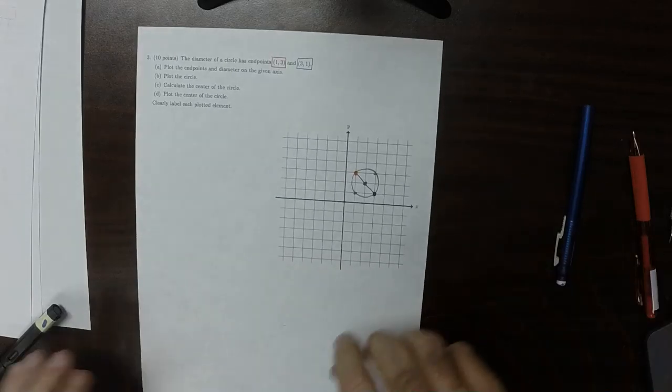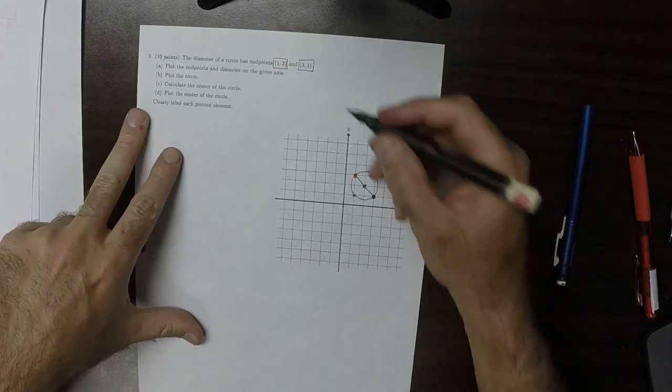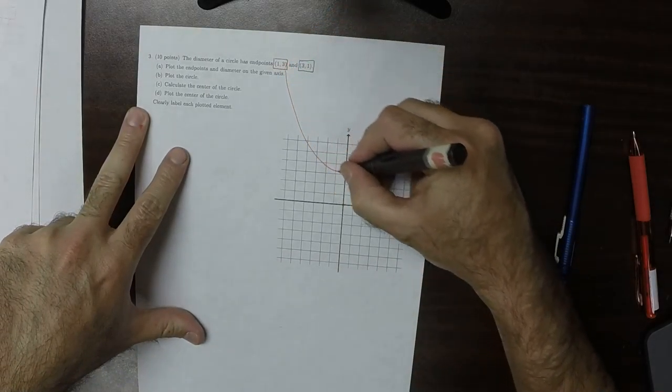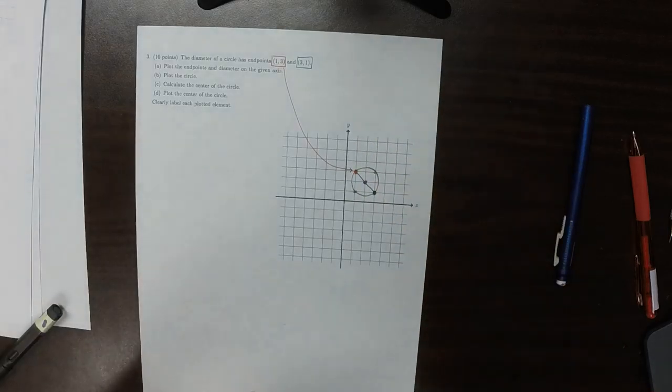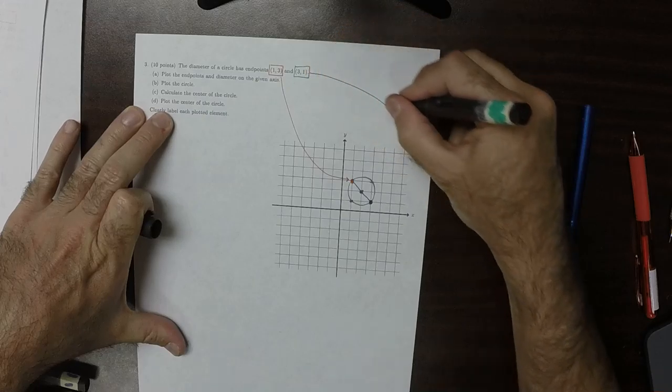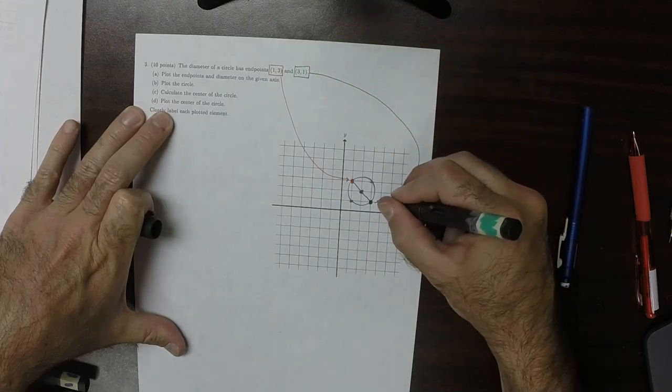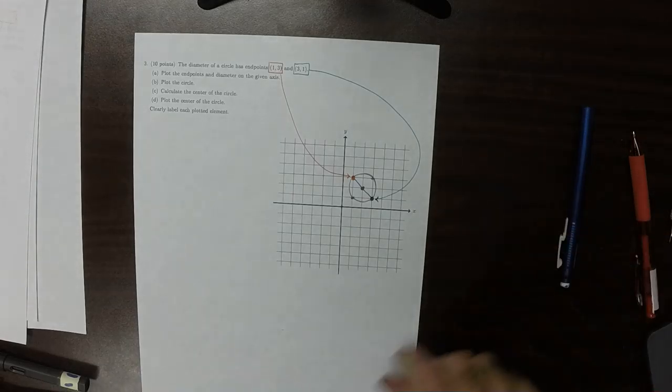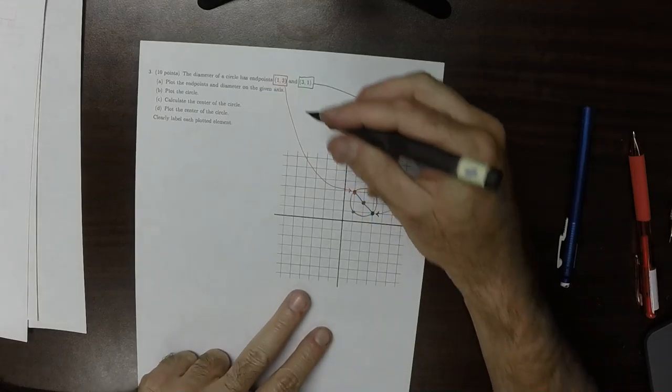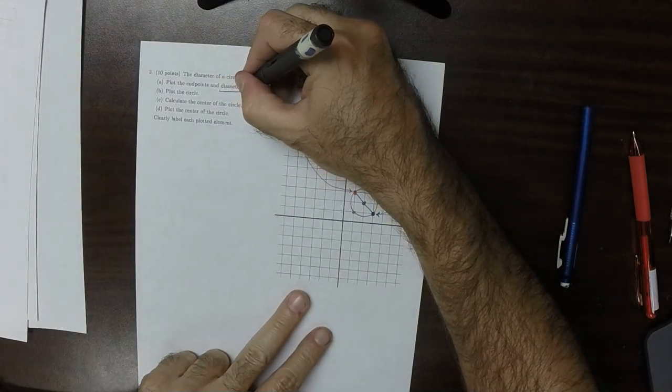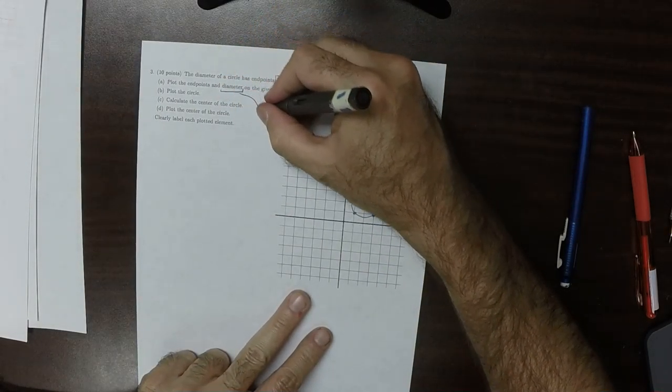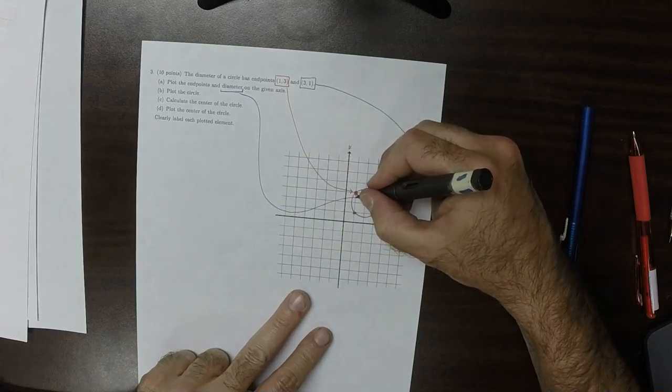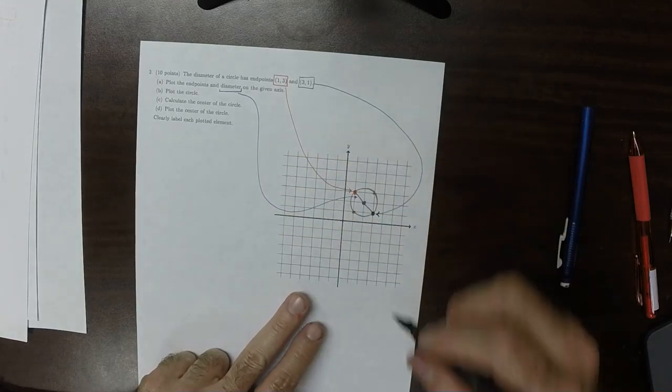So it says clearly label, so that's the red point. That's the green point. The blue is the diameter, all of the blue.